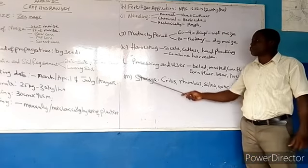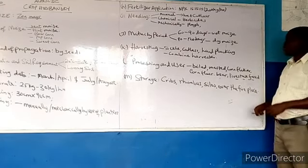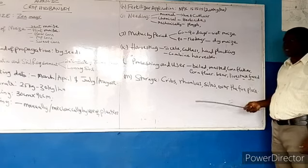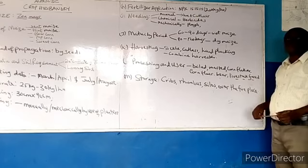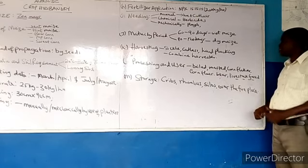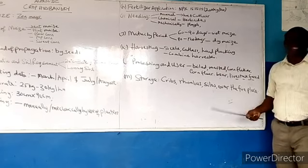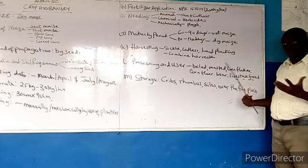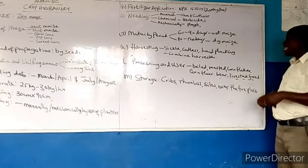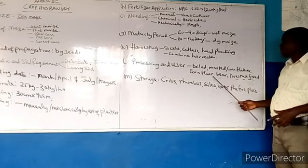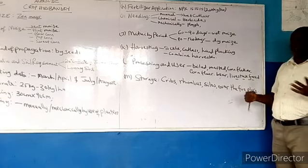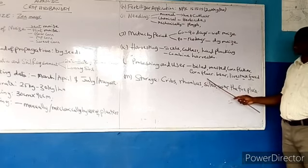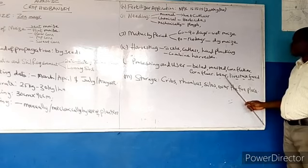After harvesting, maize is processed before it is used. You remove the husk from it, then the maize cobs can be boiled or roasted before being eaten. Maize can also be processed to make cornflakes and corn flour, which is consumed locally, or used in industries to prepare beer, alcoholic drinks, non-alcoholic drinks, and as an ingredient in livestock feed.